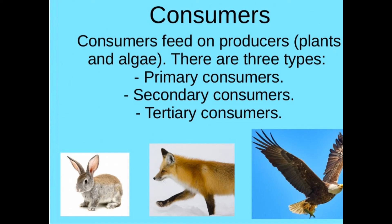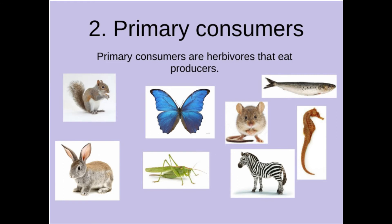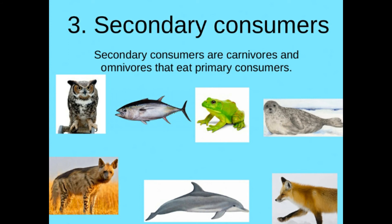Primary consumers are those animals which directly feed on plants. Examples include the grasshopper, butterfly, fish, squirrel, zebra, rabbit, and seahorse — all these animals feed on plants.